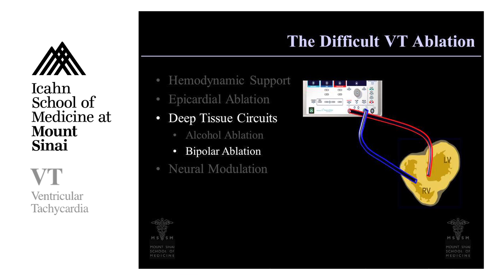Another approach is something called bipolar ablation. When we have deep tissue circuits, instead of ablating from one side or the other side of the tissue, we can put catheters on both sides of the tissue and ablate at the same time. This allows us to make more effective and deeper lesions that can be used to eliminate these sometimes very difficult-to-ablate circuits.